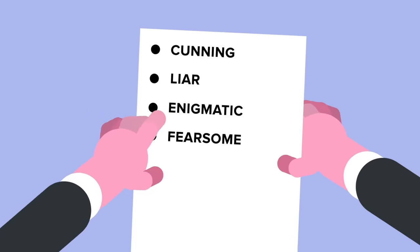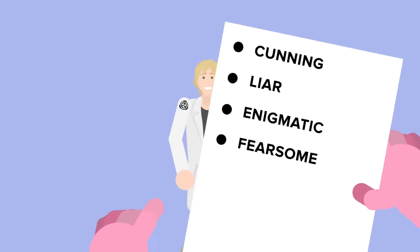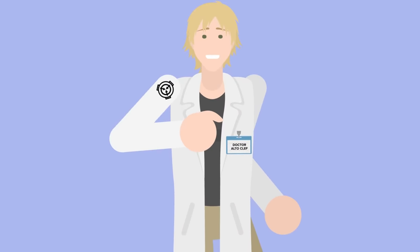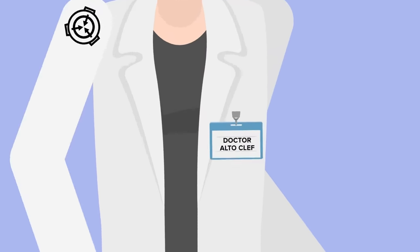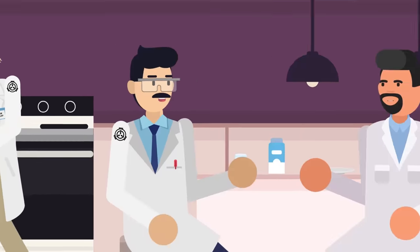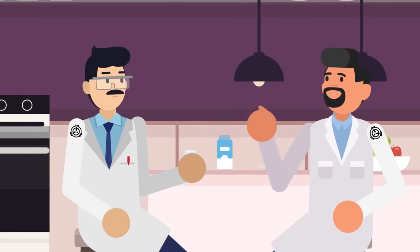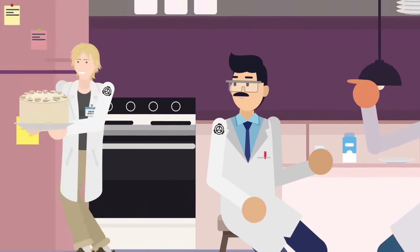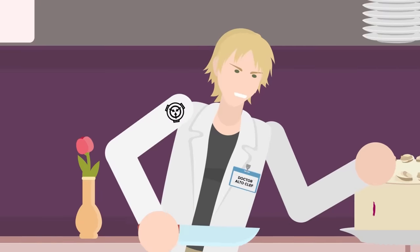Cunning, liar, enigmatic, and fearsome are just a few words used to describe a particular member of the SCP Foundation. While many of the Foundation's researchers and scientists are a pretty unusual bunch, to say the least, this one might just take the cake, and then might have said cake decommissioned in the most collaterally damaging way imaginable.